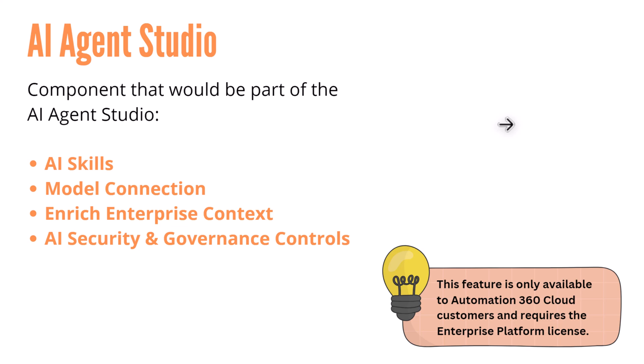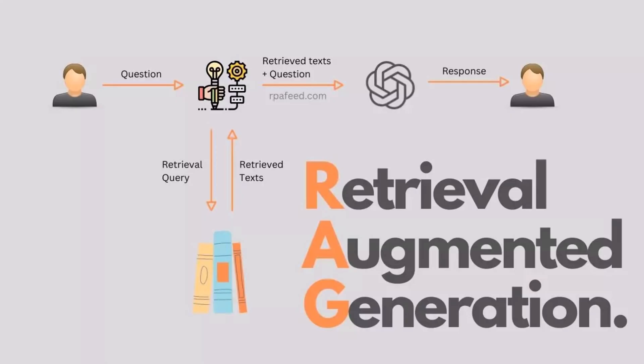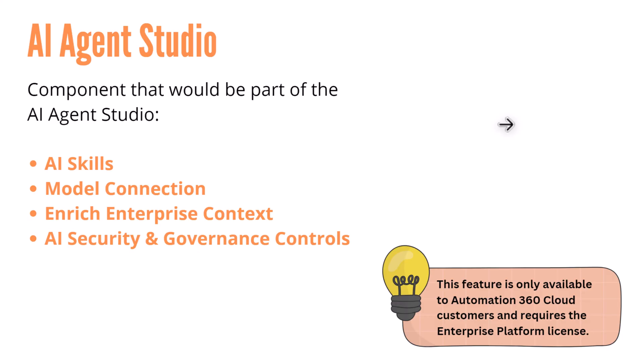Then we have model connections, which allow you to choose from a variety of models available, like AWS Bedrock, Microsoft Azure, OpenAI, Google Vertex AI, and others. Then in enterprise context, you can enhance your model outputs and reduce errors with RAG — Retrieval Augmented Generation capability. Automation Anywhere has already integrated with partners like AWS, GCP, and OpenAI.